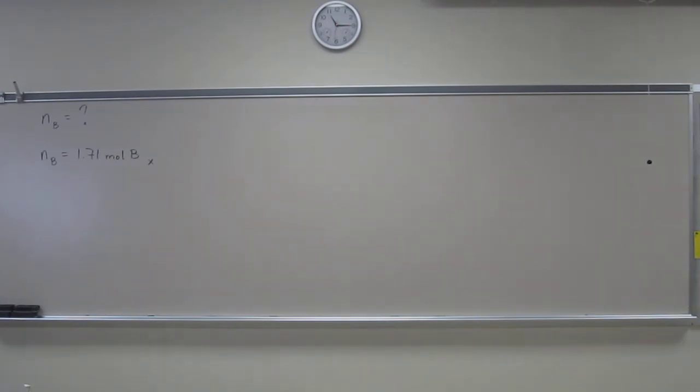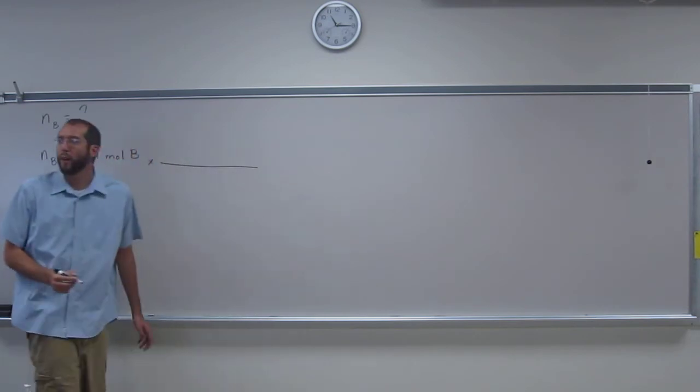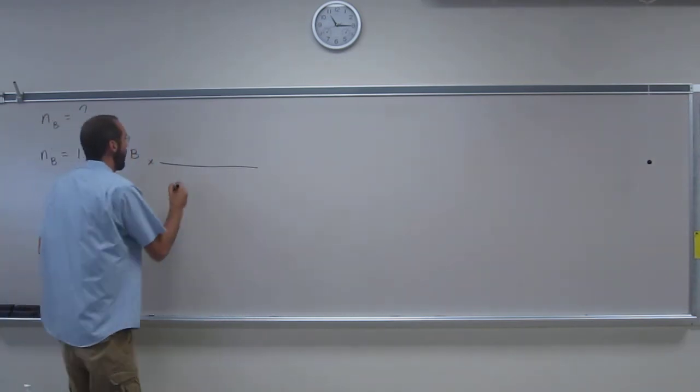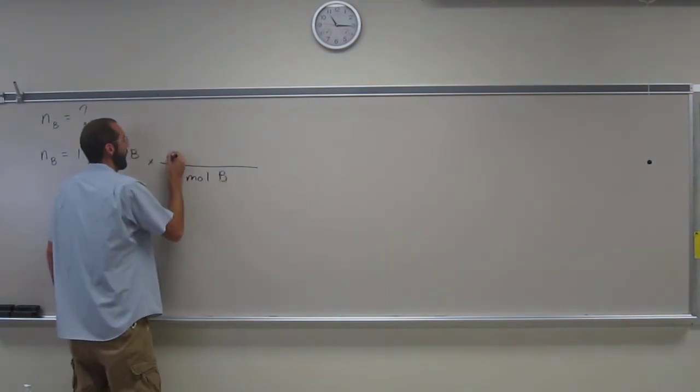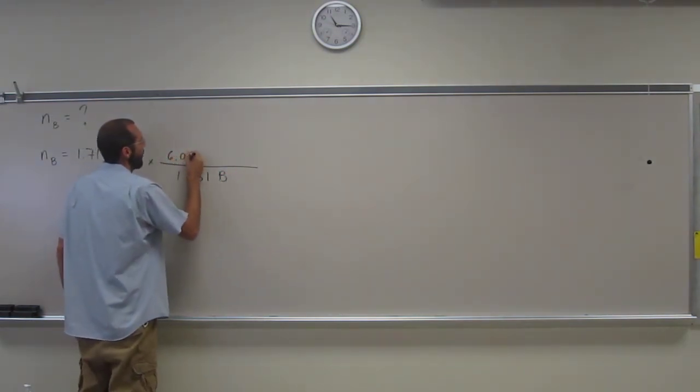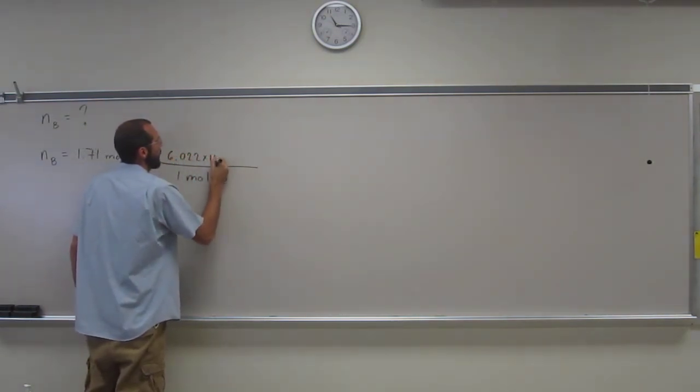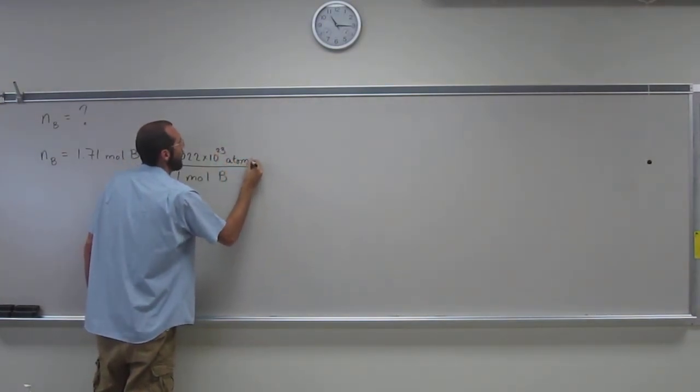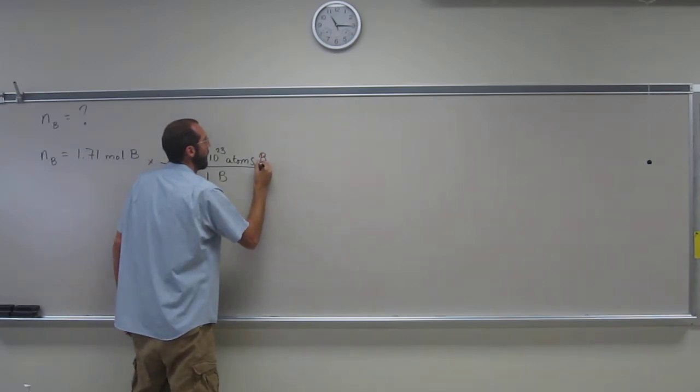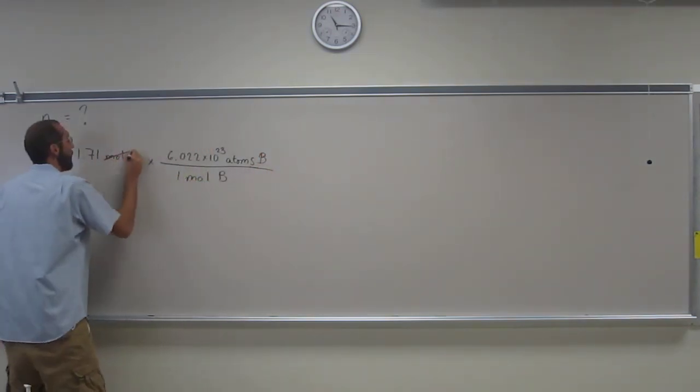And it's asking, well, what's the number of atoms? So do you guys recall how to do that? Yeah, just Avogadro's number, and this is something you should have memorized by now. So one mole of boron equals 6.022 times 10 to the 23rd atoms of boron. So we cancel.